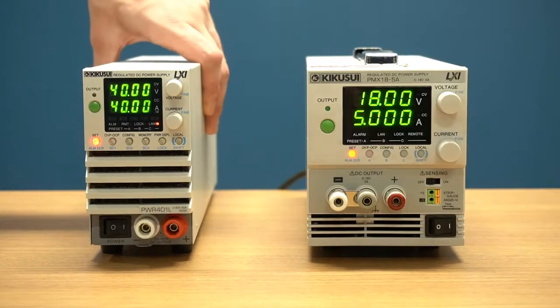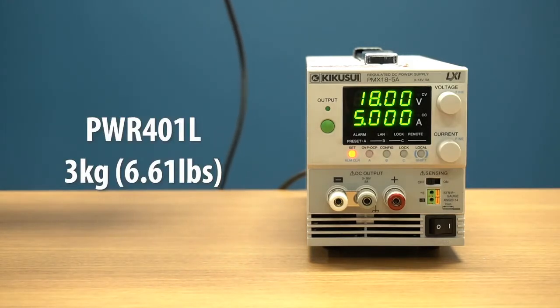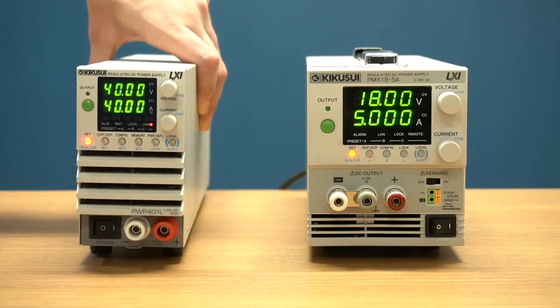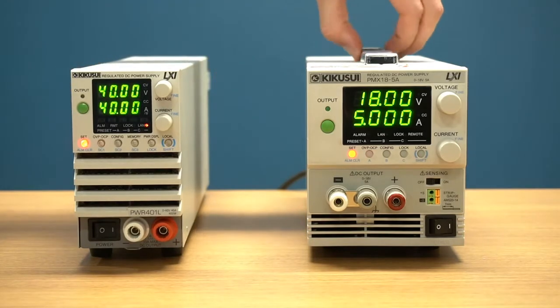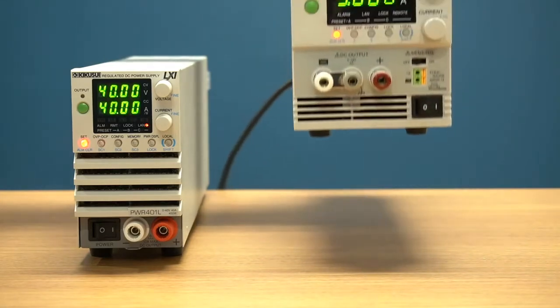The first thing you will notice when comparing these two models is the size difference. Despite having a wider power range than a linear power source of the same power, the PWR01 switching power supply has a much smaller form factor than the linear PMXA, because it does not require a bulky transformer to produce DC voltage.